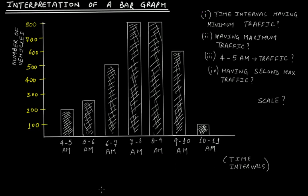Let's learn how to interpret any given bar graph or bar diagram. This bar graph shows information about traffic at a given traffic signal. On the horizontal line we have time intervals, starting from 4 to 5 am, then 5 to 6 am, 6 to 7, 7 to 8, 8 to 9, 9 to 10, and 10 to 11 am. These are the time intervals plotted on the horizontal line.